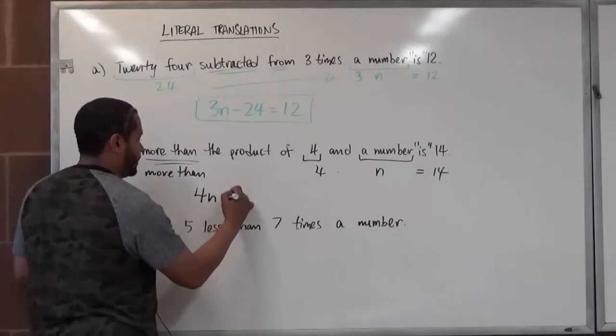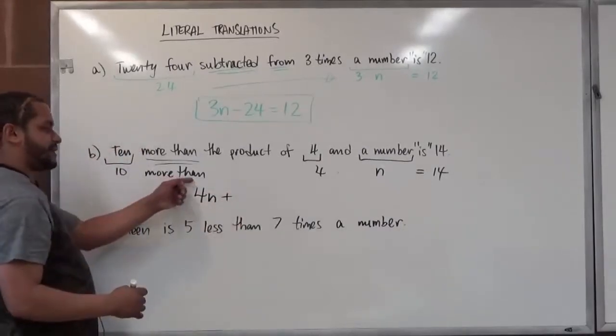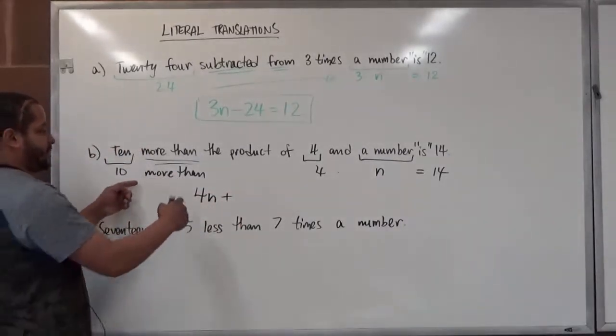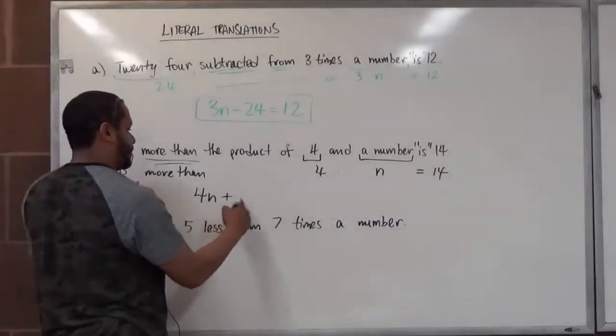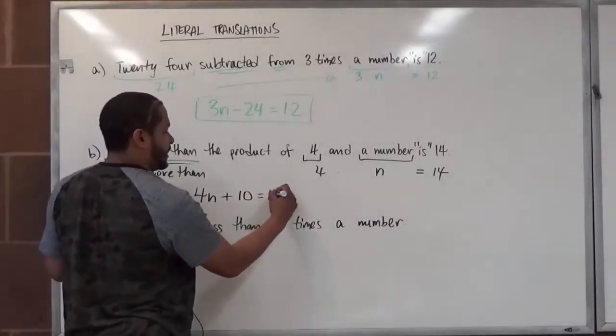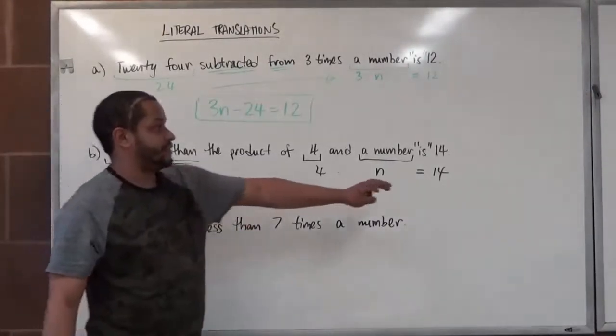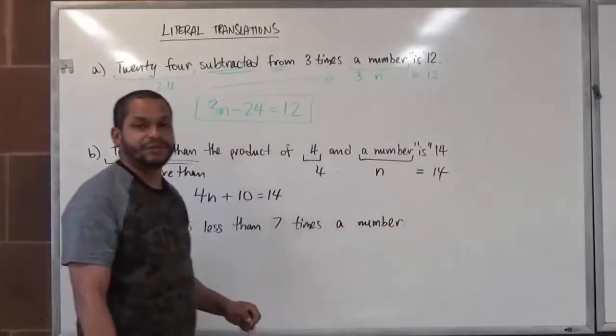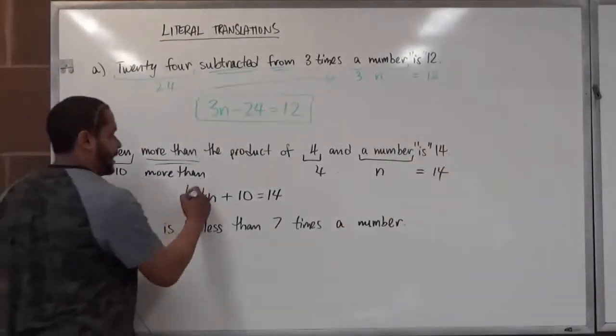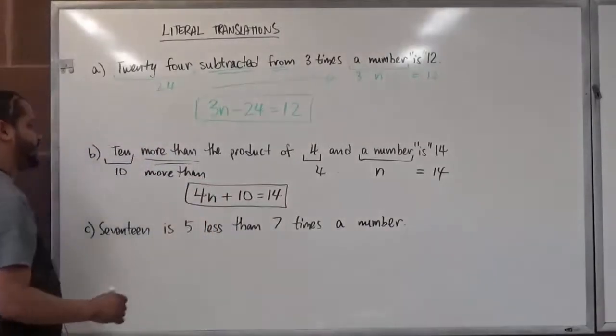And so, 4n 'more than' is a plus operation, which is post. So, we're adding to 4n the value of 10, and this is equivalent to the value of what's next to the right of the 'is,' which is 14. And here's our literal translation for that equation.